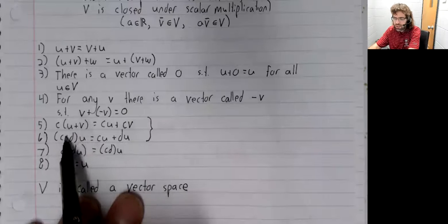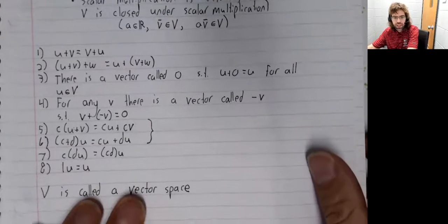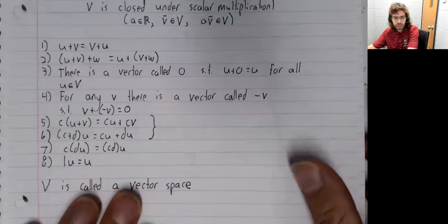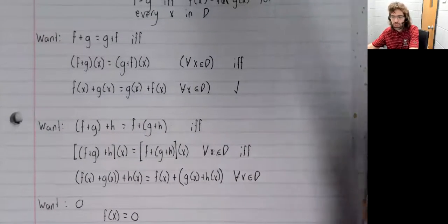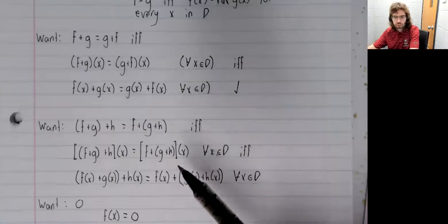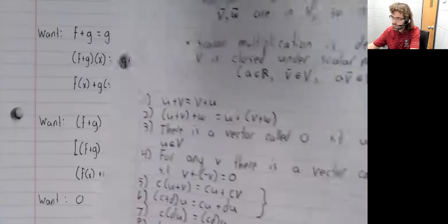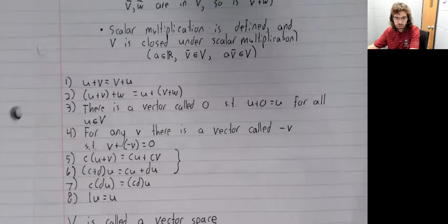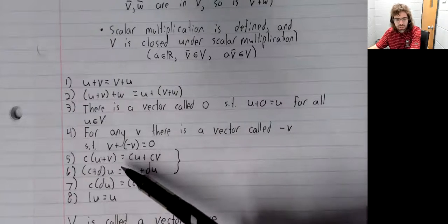Five and six are proven in the same way that we proved commutativity and associativity. So, come to think of it, are seven and eight. For five, six, seven, and eight,